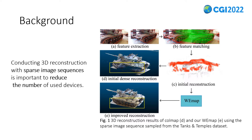However, because of real-time monitoring requirements and site safety considerations, mobile devices are not allowed in some scenarios, such as smart factories. Obviously, conducting 3D reconstruction from dense image sequences requires numerous fixed cameras, which is difficult to implement in practice due to the high setup and maintenance costs of these devices. Therefore, conducting 3D reconstruction with sparse image sequences is important to reduce the number of devices used and thus lower the cost of image acquisition.